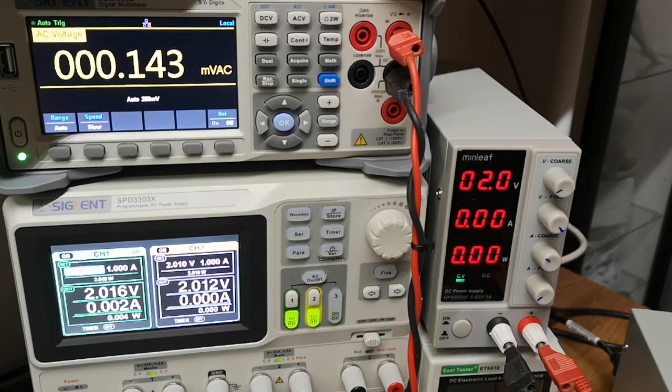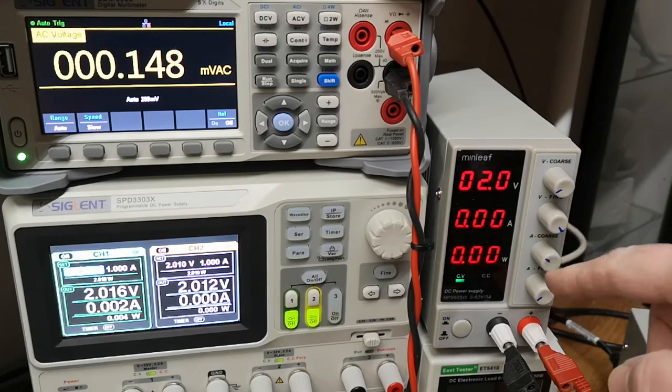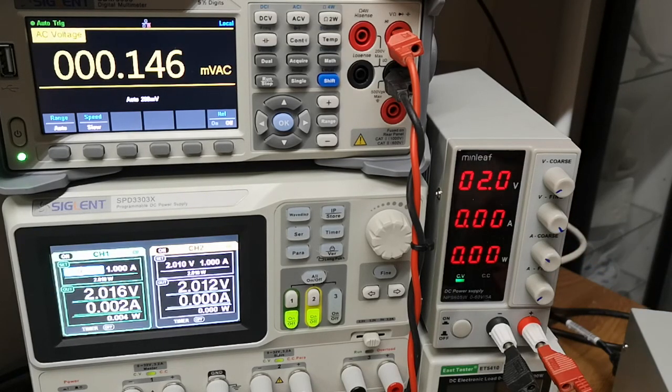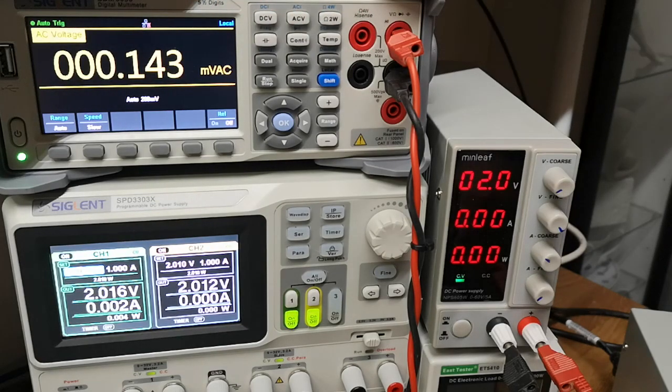So here we go, let's compare the output from the really cheap power supplies. I just put it to two volts and now I'm in AC mode. This is 0.1 millivolts of noise, but look carefully at the outputs: 140, 130, 50, something like that.